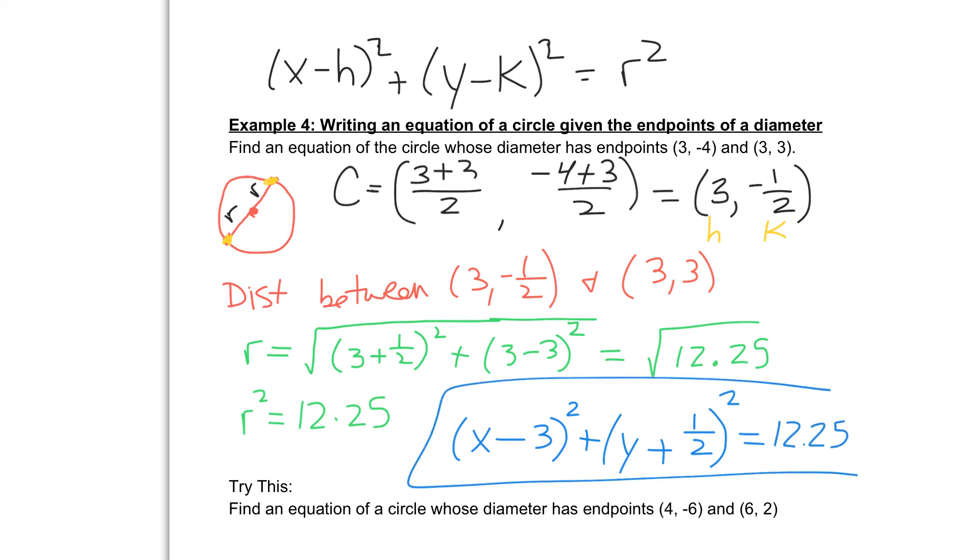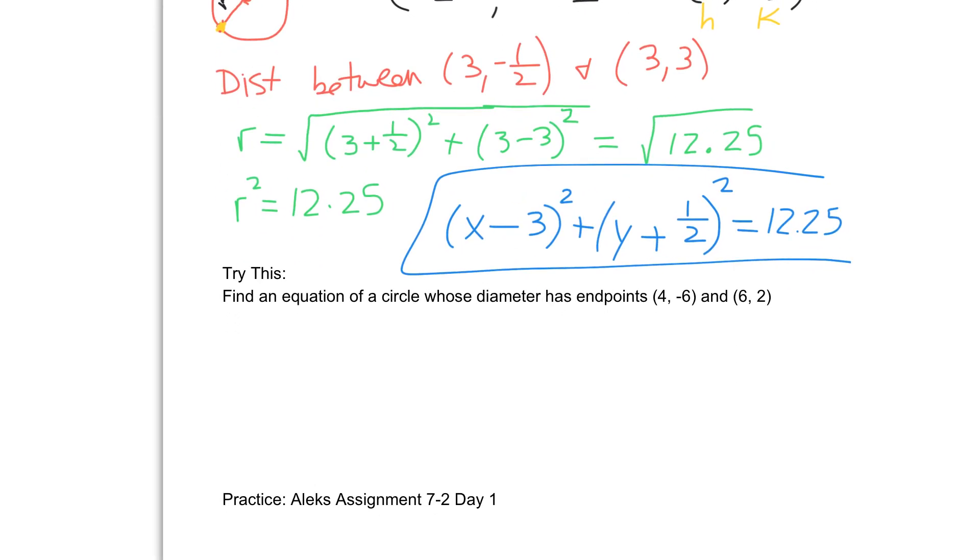Next I would like you to do the try this. So you can pause it now and unpause it when you're ready to check your answer. If you did the try this correctly, you should get (x - 5)² + (y + 2)² = 17. If you have any questions, please let me know.